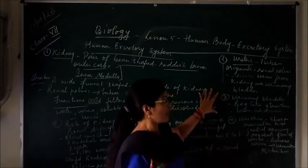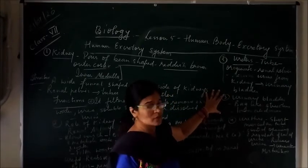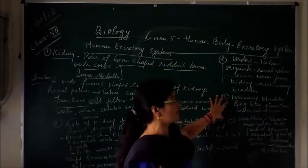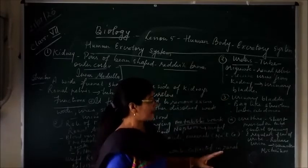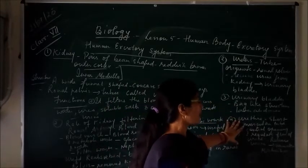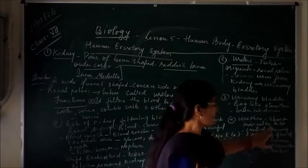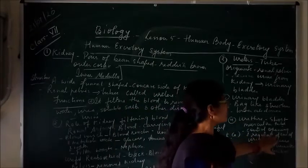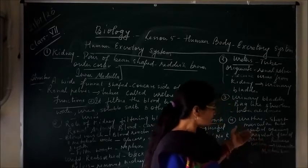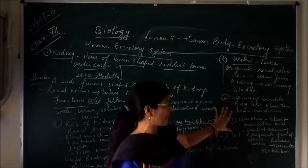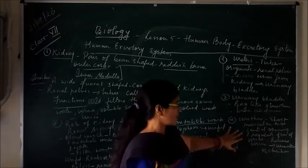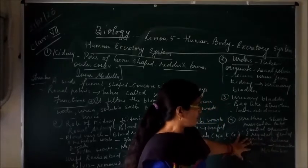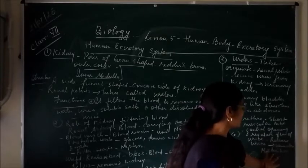The urinary bladder is a muscular bag-like structure present in the lower abdomen. The function of the urinary bladder is that urine gets collected in it, and after that it goes to the urethra, which is a short muscular tube-like structure. The main function of the urethra is that it controls the opening and regulation of the flow of urine, and after the urine enters the urethra from the urinary bladder, it is discharged out of the body.